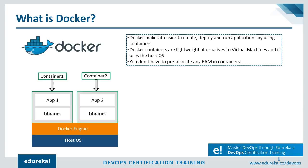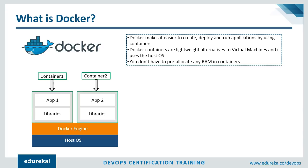This way you're safe from all of the dependency issues. In the diagram, you can see that there is a host operating system on top of which there is a Docker engine mounted. The Docker engine runs container number one and container number two. Both of these containers might have different applications, and each application has its own libraries and packages installed within the container.